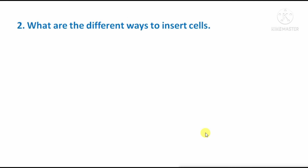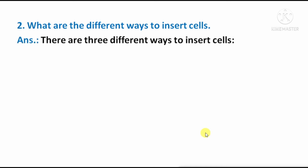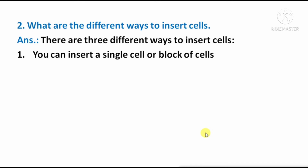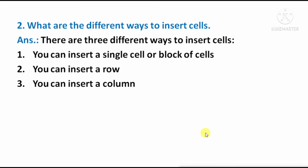What are the different ways to insert cells in Excel? There are three ways: first, you can insert a single cell or a block of cells; second, you can select a complete row; or third, you can select a complete column. So there are three total ways to insert cells in Excel.